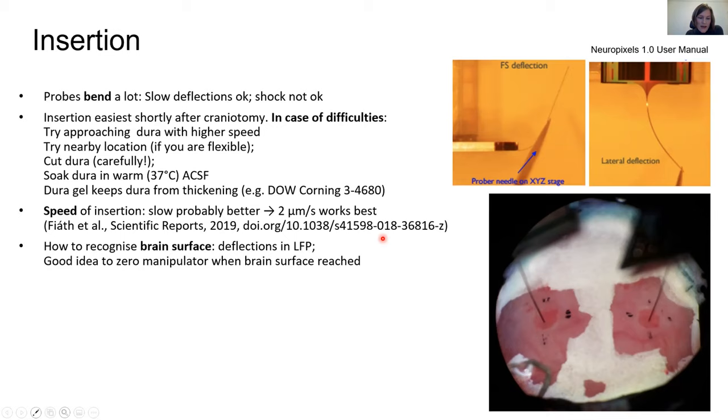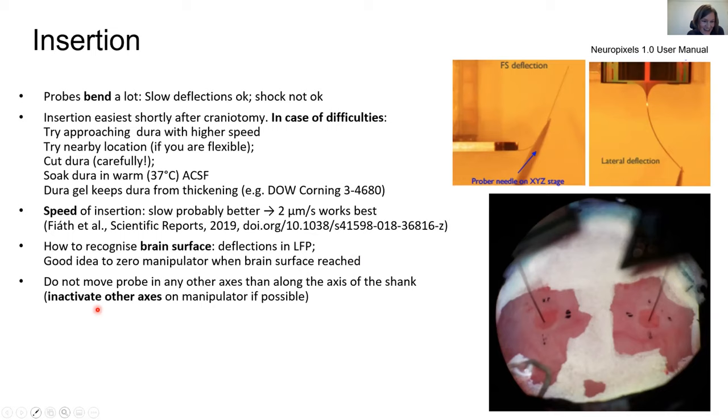Once you insert the probe in the brain, you should probably use a slow speed. Here's a paper that reports that two microns per second works best not to damage the brain too much. One question is how to recognize the brain surface, and one way we found helpful is to look at the LFP. Once you see large deflections in the LFP, you know that this is the surface of the brain. At this point, zero your manipulator, and from there on you count how deep the probe goes. Once you insert the probe, you should not move the probe in any other axis other than along the probe, and the best way to do this is just to inactivate other axes.